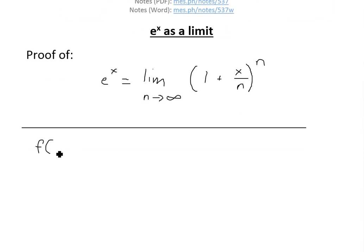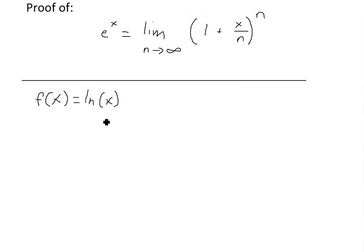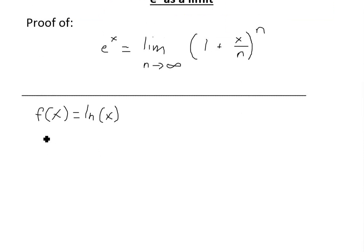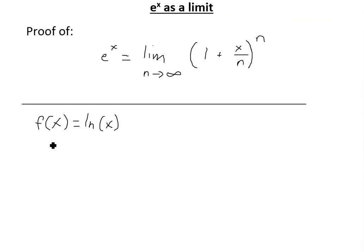We start with f of x equals ln of x. As shown in an earlier video, the derivative of this is f prime of x equals 1 over x. So that's the derivative of ln of x.